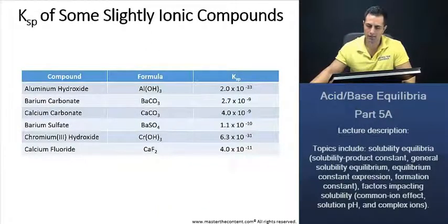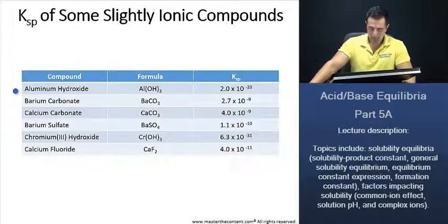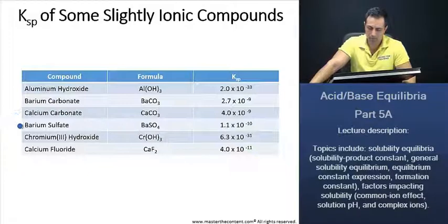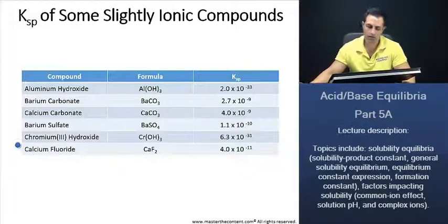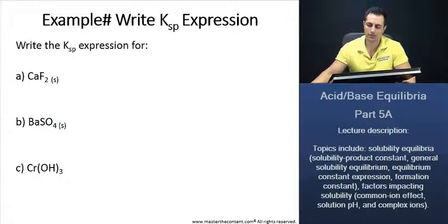Before that, let's take a look at some solubility product constants of some slightly ionic compounds. Here we're looking at aluminum hydroxide, barium carbonate, calcium carbonate, barium sulfate, chromium hydroxide, and calcium fluoride. Now we're ready for some examples.